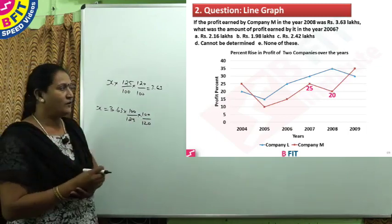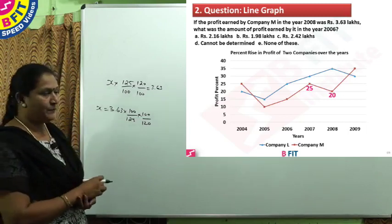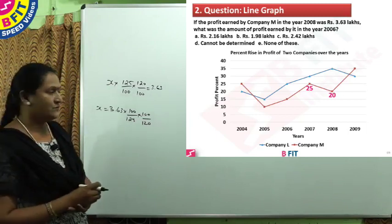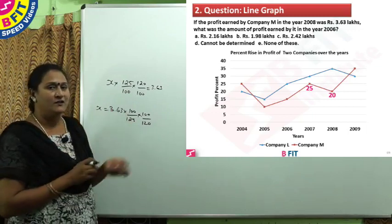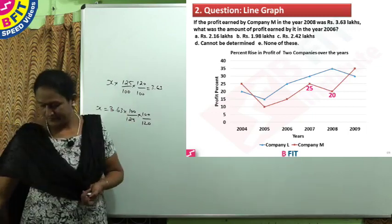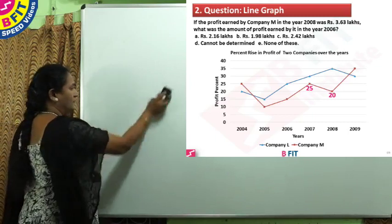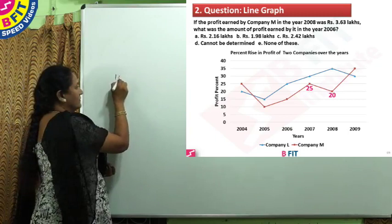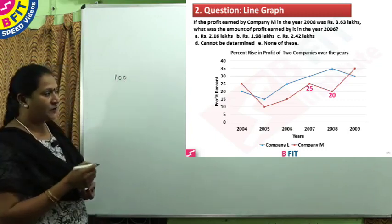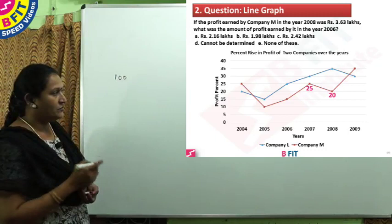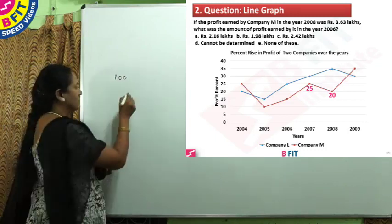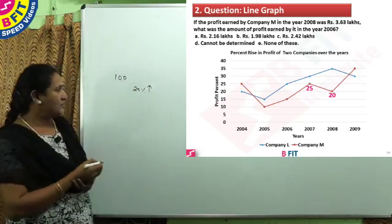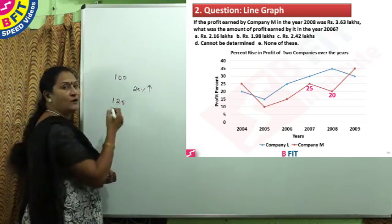Instead of doing all that working, we can easily work with 100 itself, since the data is given as percentages. Assume the initial value is 100 to easily find the answer. So assume that in 2006 the profit was 100. Now what will be the profit for 2007? It is after a 25% increase. 25% of 100 gives 25, so 2007 profit will be 125.